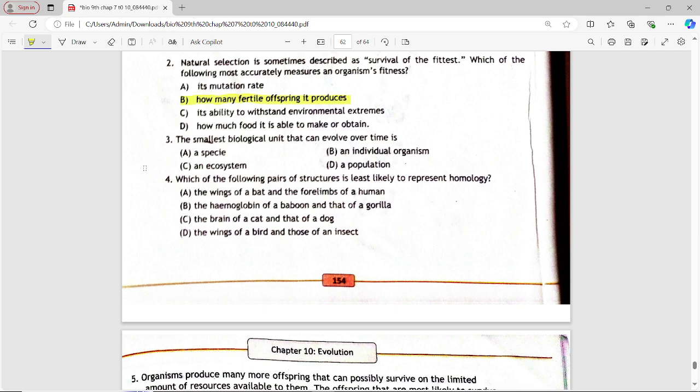Next MCQ is, the smallest biological unit that can evolve over time is. Options are: a species, an individual organism, an ecosystem, a population. Answer is option D, a population.